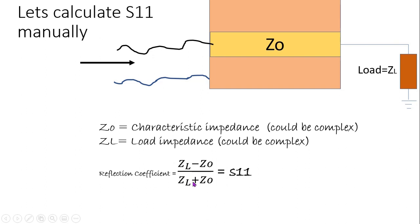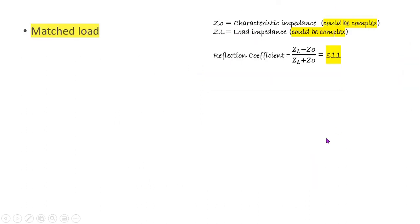And it is said that your reflection coefficient is equal to ZL - ZL means your load - minus your characteristic impedance, divided by ZL plus Z naught, is equal to reflection coefficient. And we have proved that reflection coefficient is nothing but our S11. So if we want to calculate S11 manually, then we can do this without using any simulation tool. Keep these things in your mind and see for matched load what we have here.